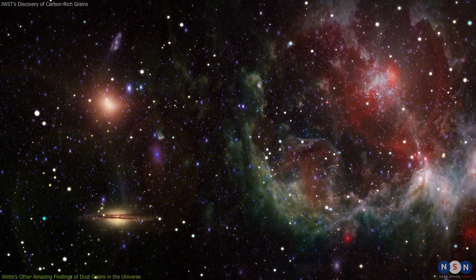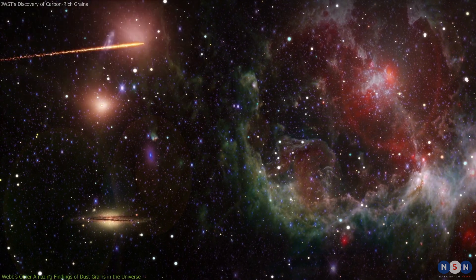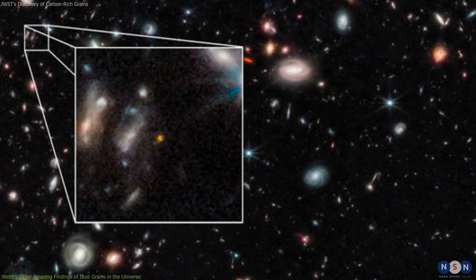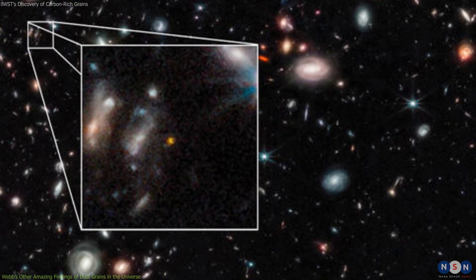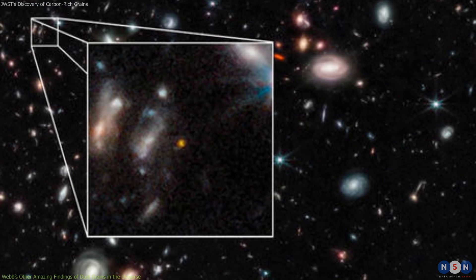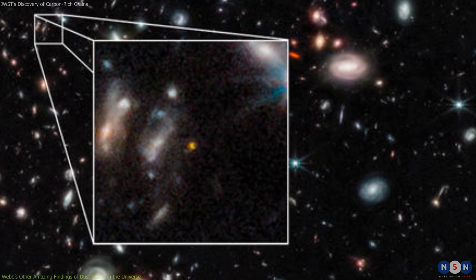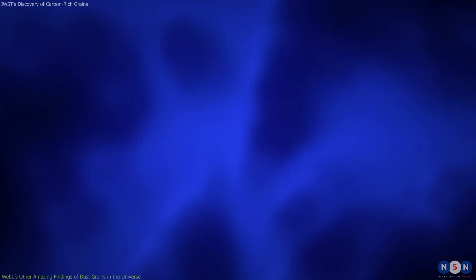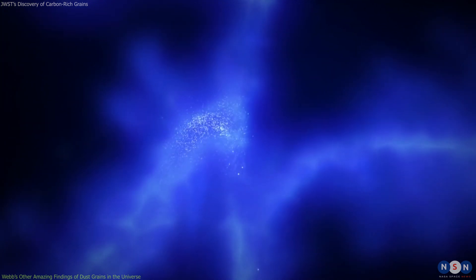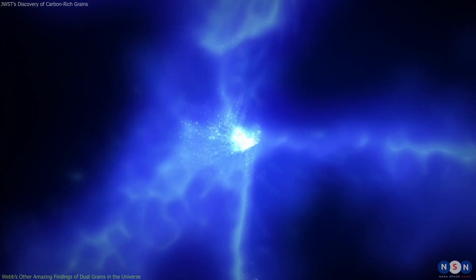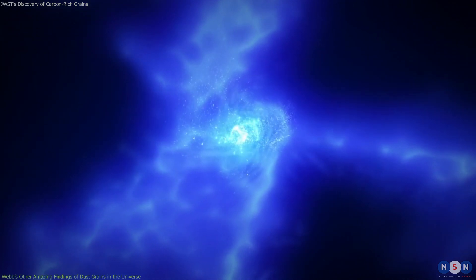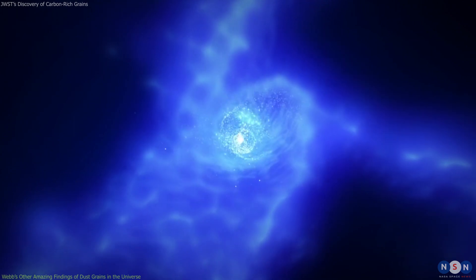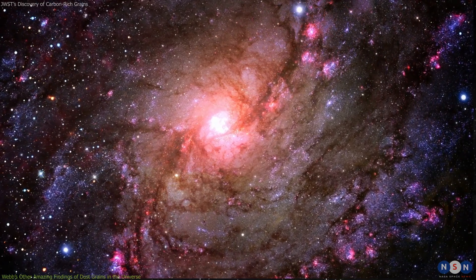The researchers used NIRCam to map the PAH emission across the galaxy and found that it is stronger in the outskirts than in the center. They also found that the PAH emission correlates with the presence of ionized gas and young stars, which suggests that star formation is more active and efficient in the outer regions of this galaxy. This is contrary to what we see in most galaxies today where star formation is more concentrated in the center.